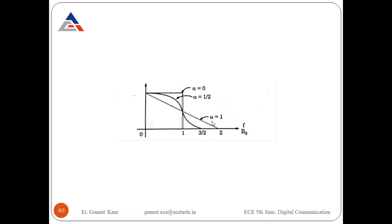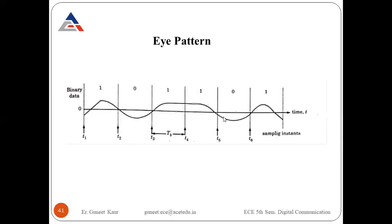The eye pattern (eye diagram) is a pattern displayed on the screen of a CRO (oscilloscope) whose shape resembles the human eye, which is why it is called an eye pattern. It is a practical way to study inter-symbol interference. The eye pattern reveals the effect of ISI on a PCM or data communication system.